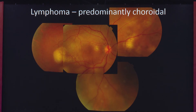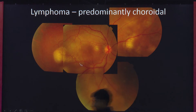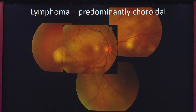These uveal lymphoma lesions can sometimes mimic age-related macular degeneration. I myself have had patients where what looked like AMD — a small pigment epithelial detachment not going away — could actually be a choroidal lymphoma. So if it looks a little atypical or is not responding to anti-VEGF the way it should, consider whether we are missing a uveal lymphoma.